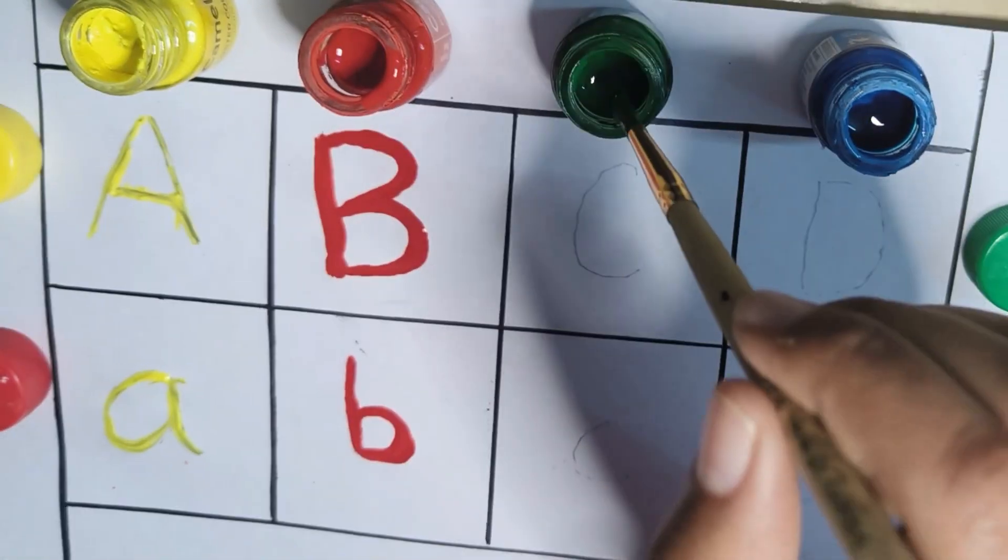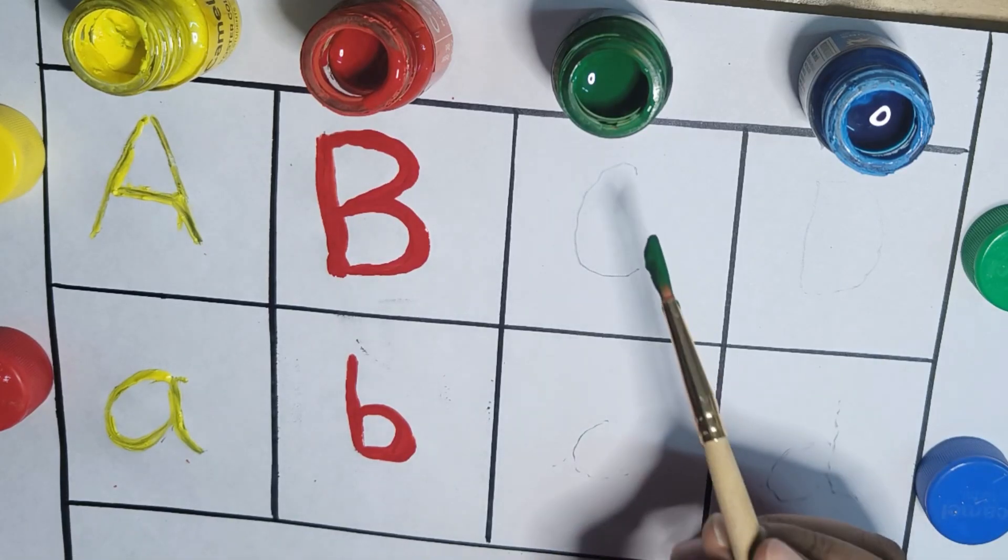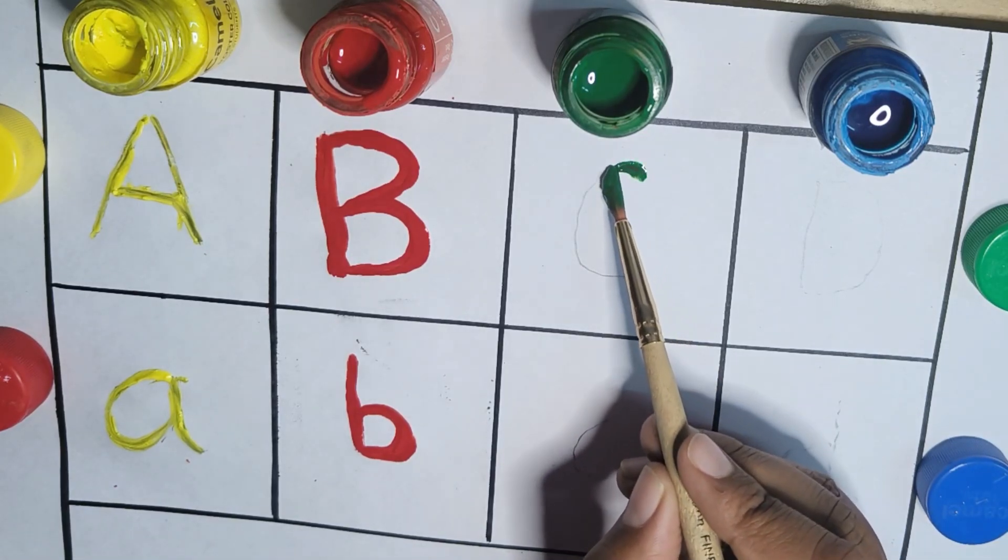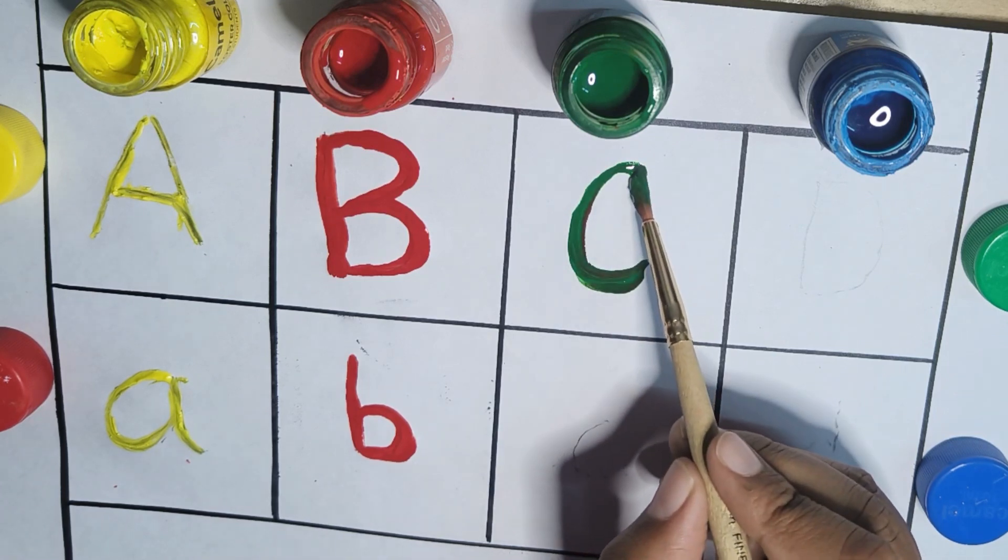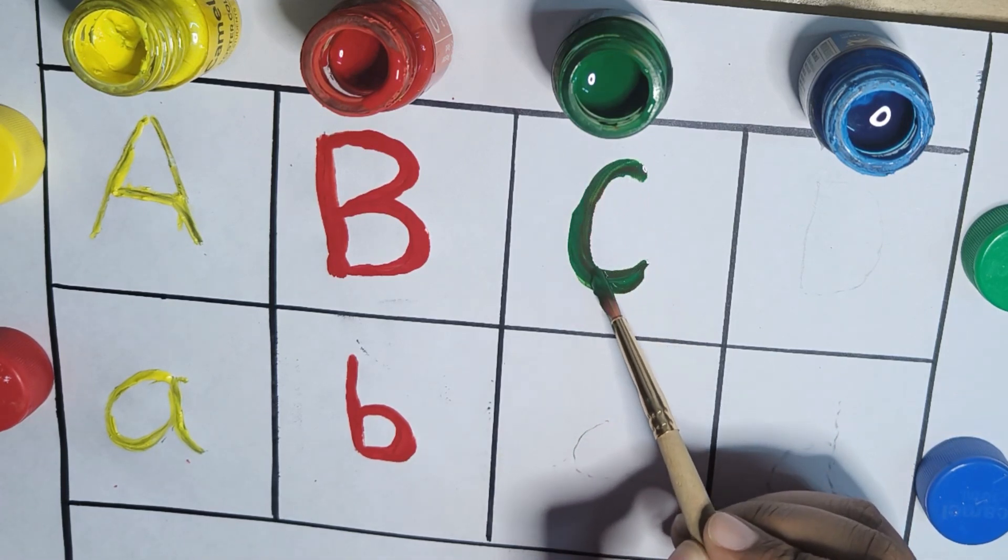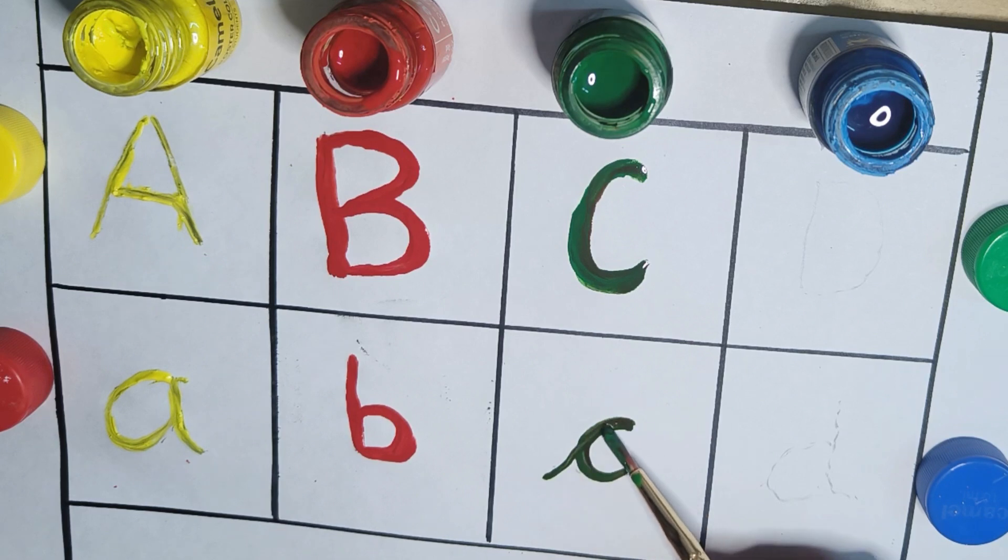This one is green color. This is green color, C. C for cat. In a small letter you have to make C like this. C for cat.